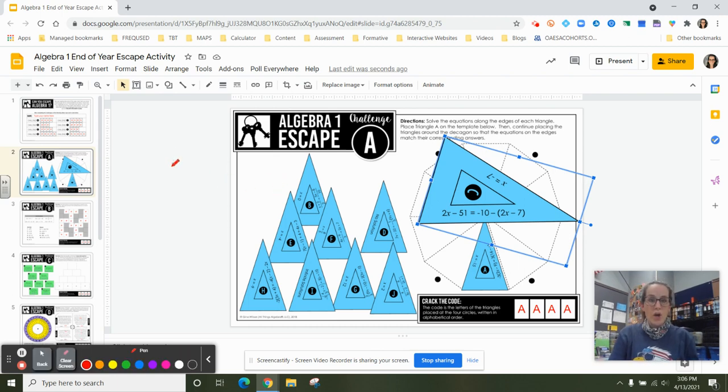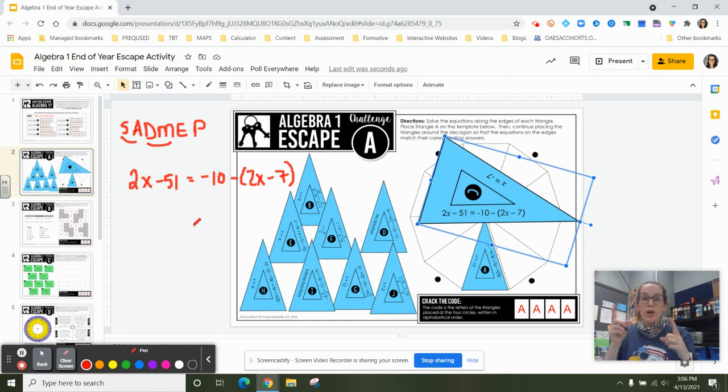When I'm solving equations, I know I'm doing inverse order of operations, undoing that order of operations. So I have 2x minus 51 equals negative 10 minus 2x minus 7. Whenever I do an equation, I always start by writing down the original equation. A big mistake that I see a lot of students make is when they start doing it first automatically in their head, they oftentimes get a sign wrong and then they don't have work to go back and check. So I always start by rewriting the equation. That just helps develop awareness.